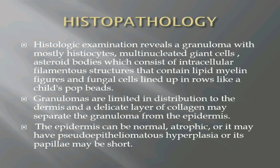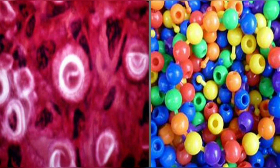The granulomas in lacasiosis are limited in distribution to the dermis. A delicate layer of collagen may separate the granuloma from the epidermis. The epidermis can be normal, atrophic, or it may have pseudoepitheliomatous hyperplasia, or its papillae may be short. These two images show the resemblance between the organism causing lacasiosis on the left and the child's toy known as pop beads on the right.